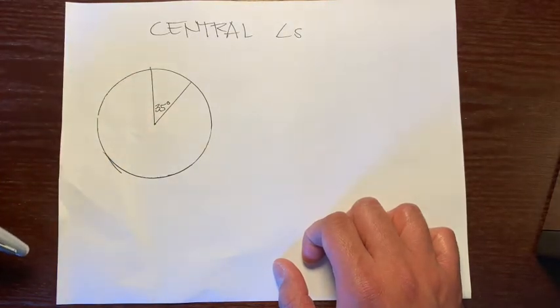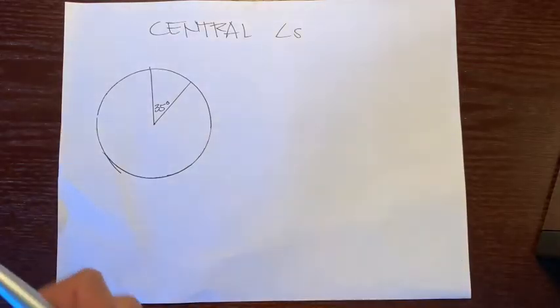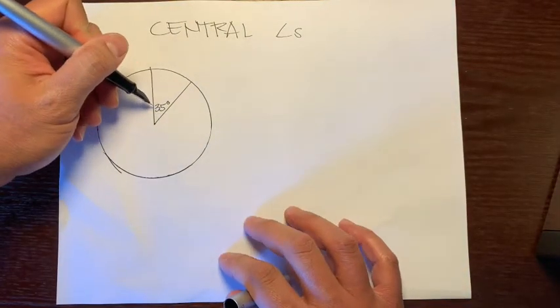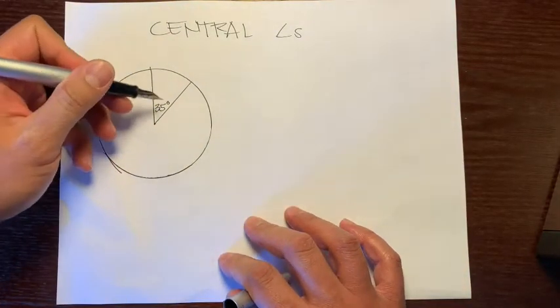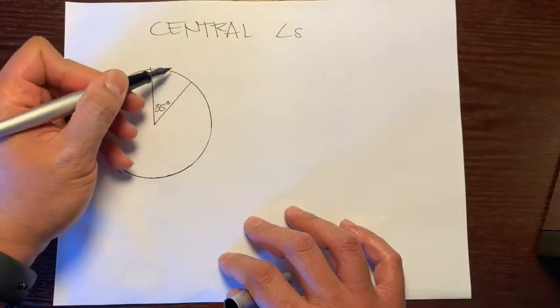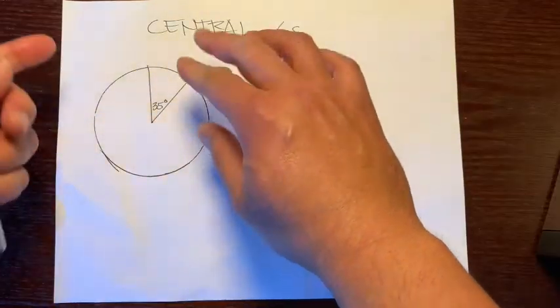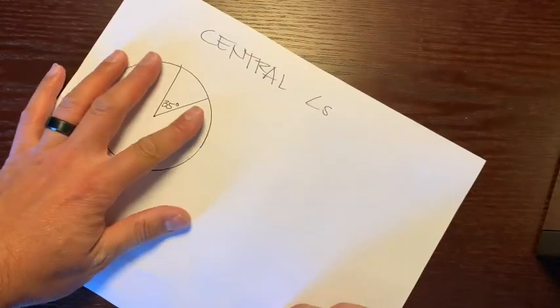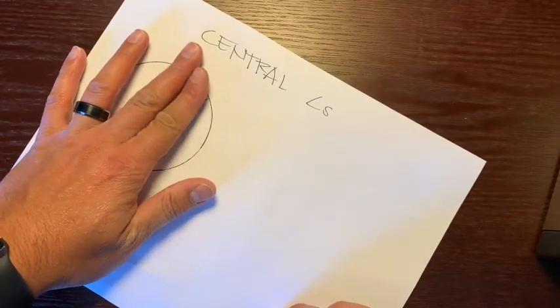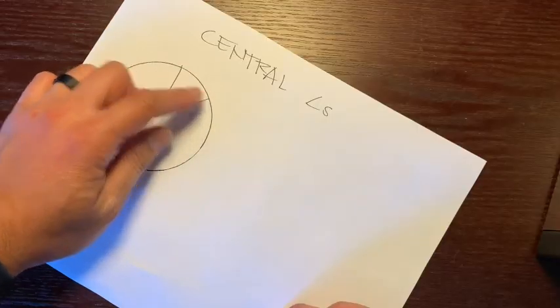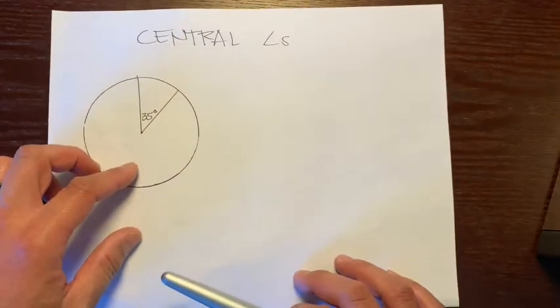So central angles tell you a few things, not just the measure of this angle, but it also gives you the measure of its intercepted arc. Just think about it as the mouth of Pac-Man, so let's rotate it. This mouth is eating this arc right here, so it tells you how many degrees that arc is.